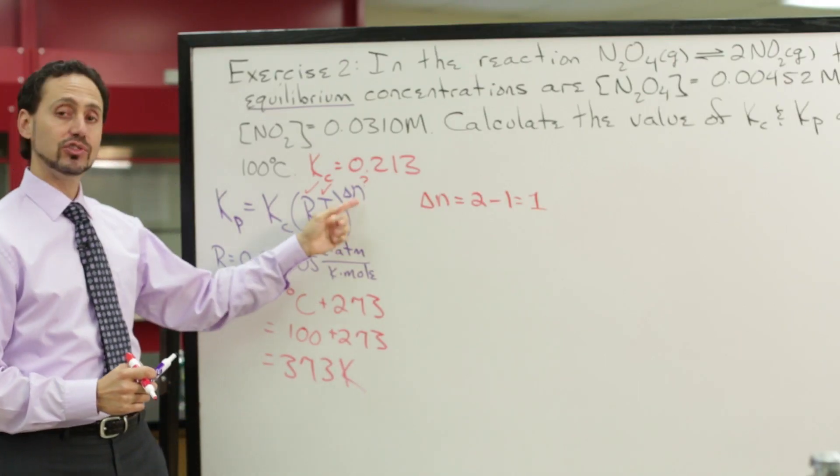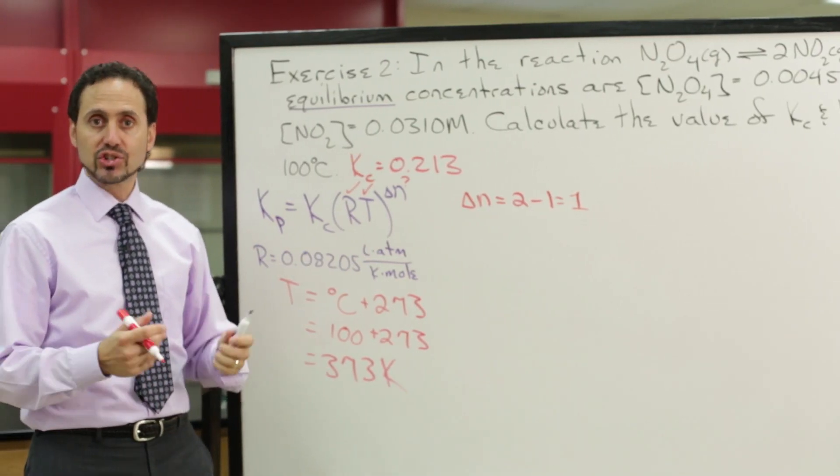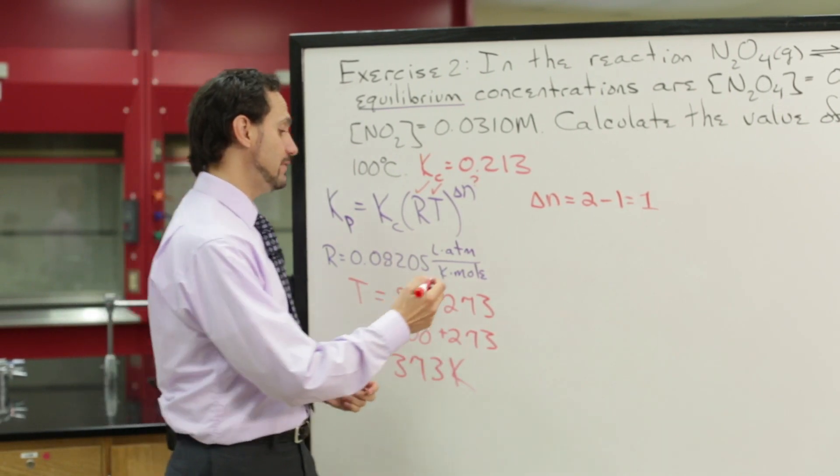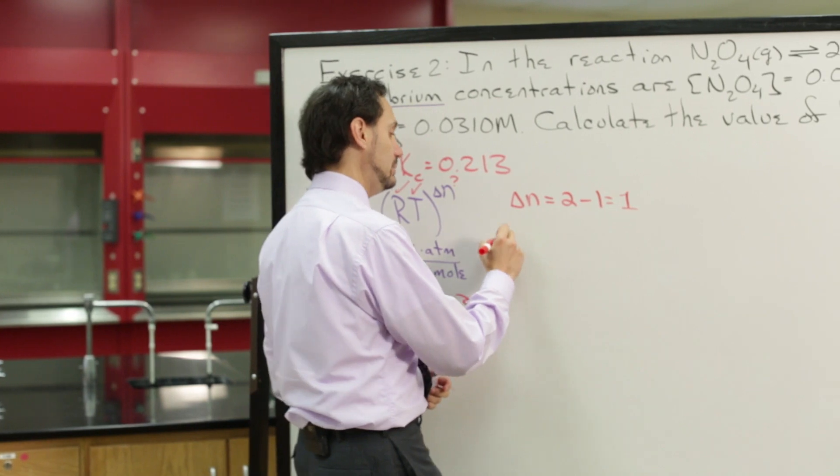So RT raised to the first power, essentially RT. Now we have all the numbers we need. We can plug in the values to solve for K sub P.